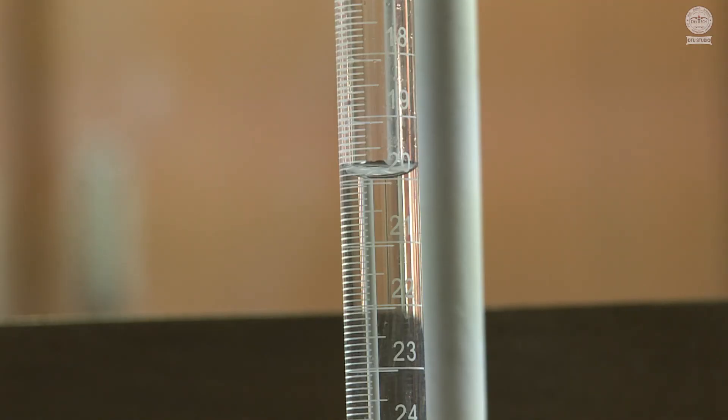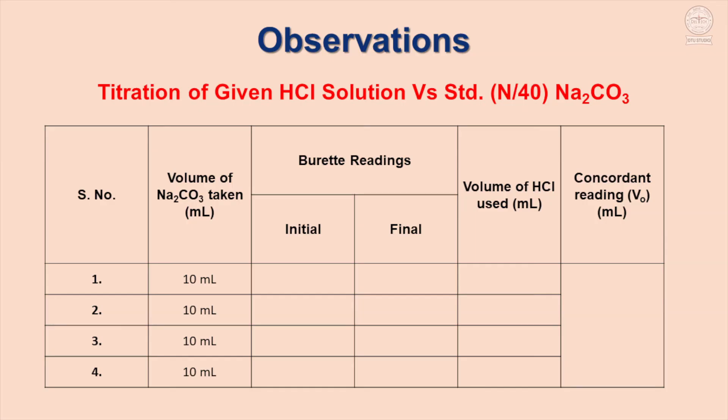The volume of acid used is noted. The experiment is repeated four to five times till at least two concordant readings are obtained. Readings are noted in the form of a table — observation table for the standardization of hydrochloric acid using N/40 sodium carbonate.